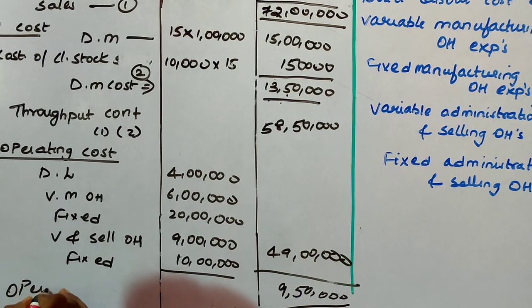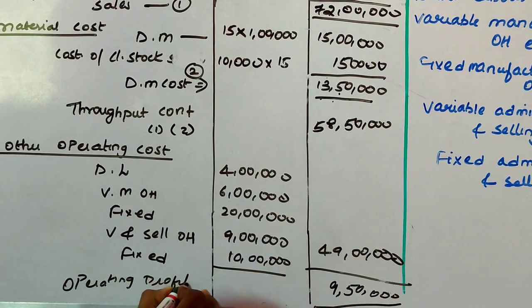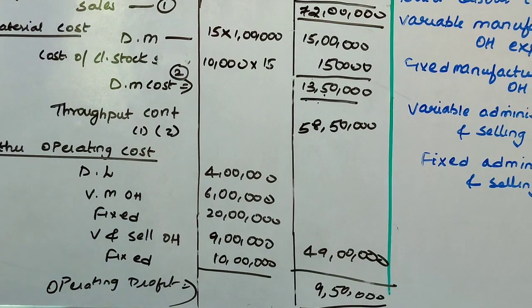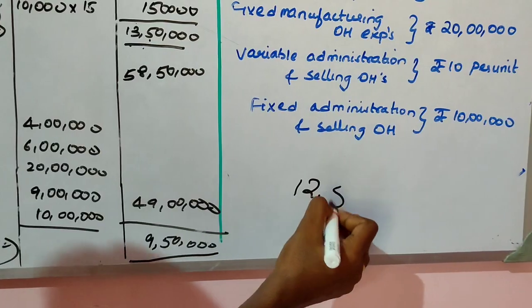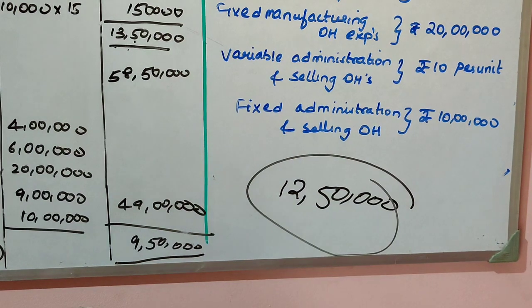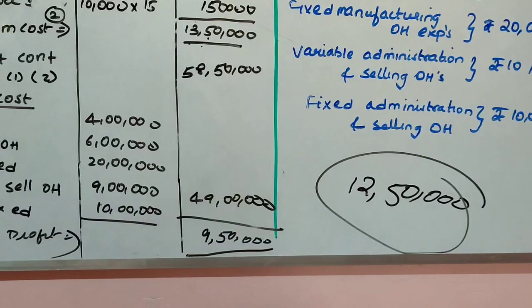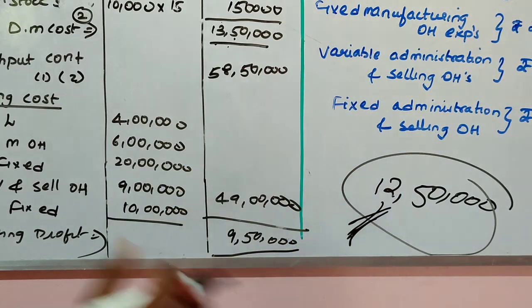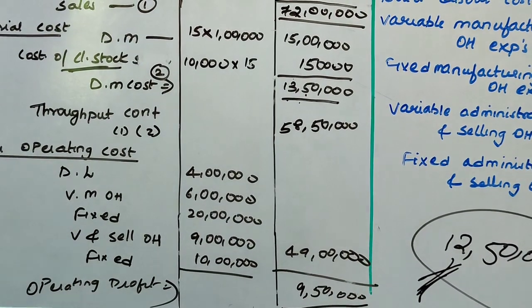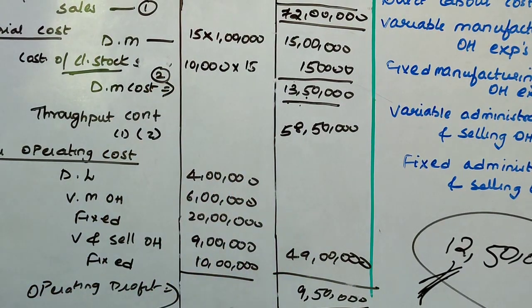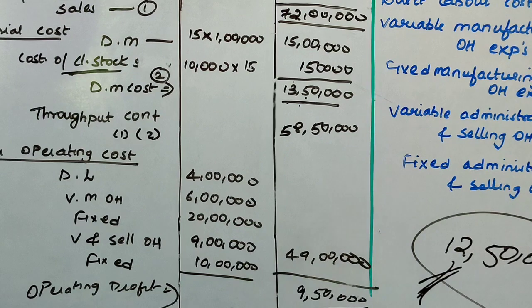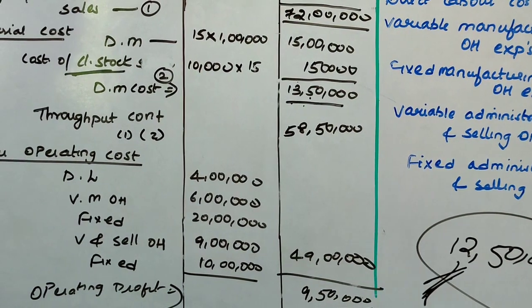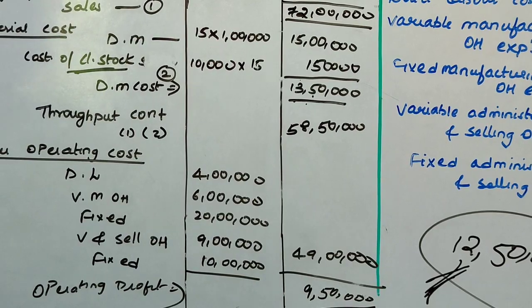So the operating profit under throughput accounting is 9 lakhs 50,000 and under absorption costing it is 12 lakhs 50,000. The difference in operating profit is only due to the treatment of closing stock — in absorption costing, closing stock is deducted from total manufacturing cost, whereas in throughput accounting, closing stock is valued only at material cost. Other than that, there is no difference between throughput accounting and absorption costing. Thank you.